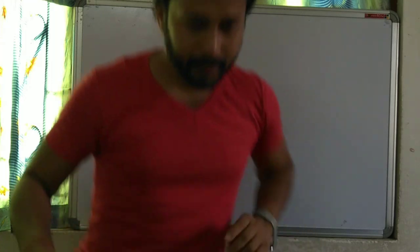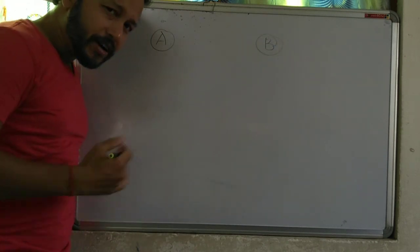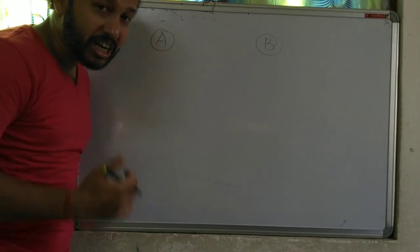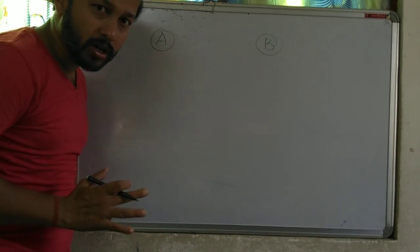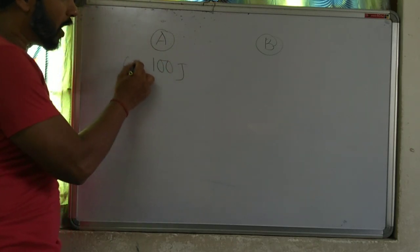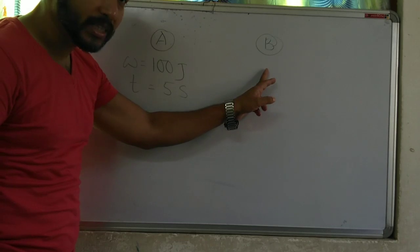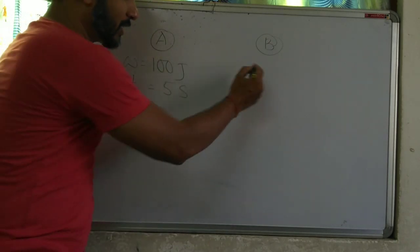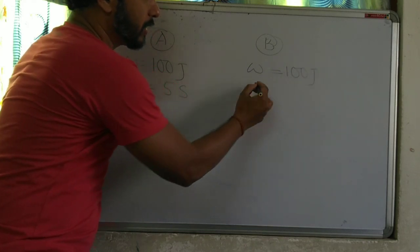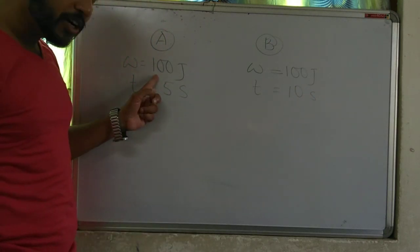Now we shall discuss about power. Let us consider two persons — person A and person B. Person A has done a work of 100 Joule in just 5 seconds. Whereas person B has done the same work, that is 100 Joule, but in 10 seconds. Now, whose power is higher?